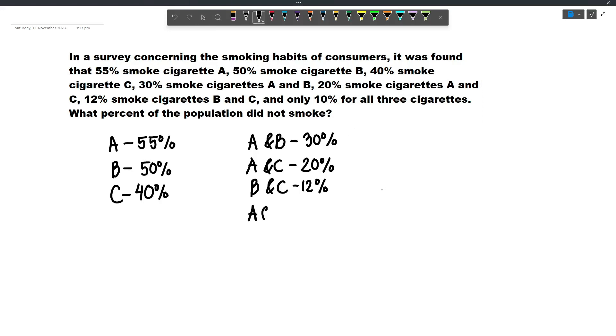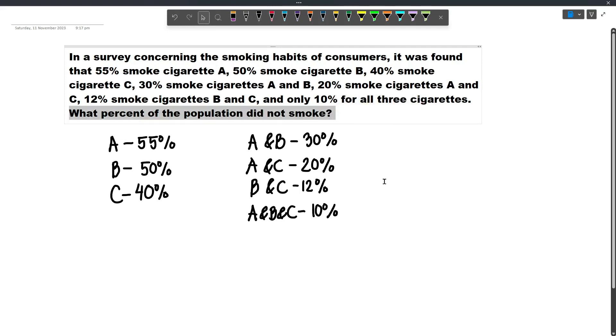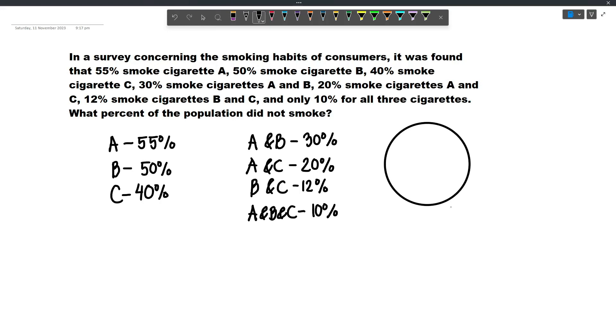So A and B and C accounts for 10%. And so to solve for the percent of the population who did not smoke, let's draw a Venn diagram. Now let's label this as A and let's label this as B and then let's label this as C.